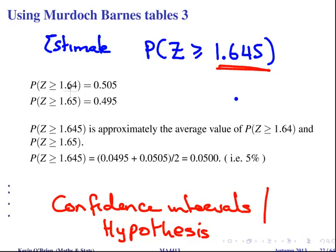The probability of z being greater than 1.64 is 0.0505 and 1.65 is 0.0495, roughly about 5% each. The probability of z being greater than or equal to 1.645 is approximately the average of those two numbers. So it's essentially the average which is about 5%, 0.0500.